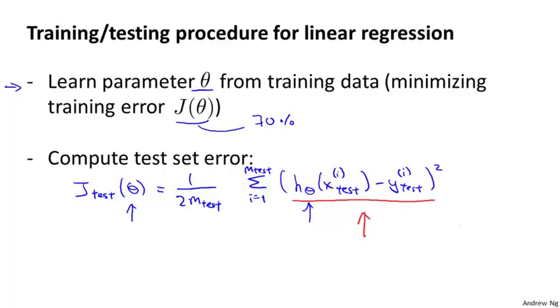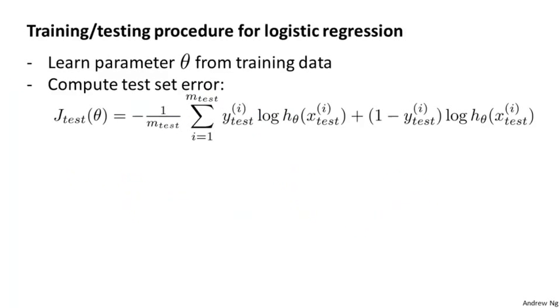How about if we were doing a classification problem and using logistic regression instead? In that case, the procedure for training and testing logistic regression is pretty similar. First, we will learn the parameters from the training data, that first 70% of the data. And then we will compute the test error as follows. It's the same objective function as we always use for logistic regression, except that now it's defined using our m subscript test test examples.